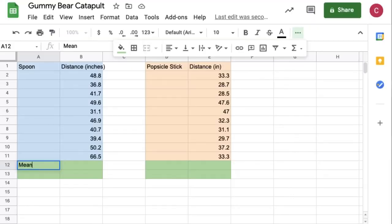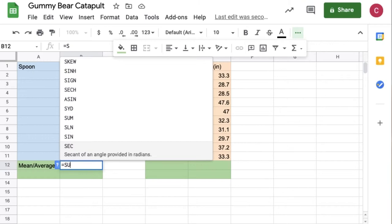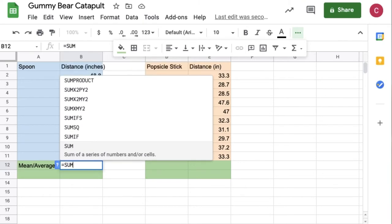This will give you the average or the mean which is represented by x with a bar over it. Now going back to the spreadsheet you can type equals sum with the parentheses and then click and highlight all the values you want to add together and press enter. This will add them all for you. Once we have that number we know from our equation that we need to divide by 10 to find the mean. So the mean distance that catapult one launches the gummy bear is 45.17 inches.